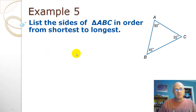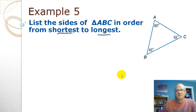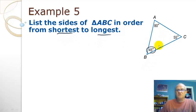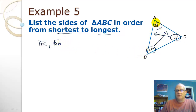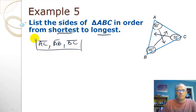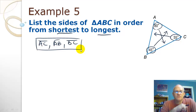Now we know the angles and want to list the sides from shortest to longest. If we want the shortest side, we find the smallest angle, which is 45°, and the side straight across from that is AC — the shortest side. The next angle is 55°, and across from that is AB. The largest angle is 80°, and straight across from that is BC. So the order from shortest to longest is AC, AB, BC.